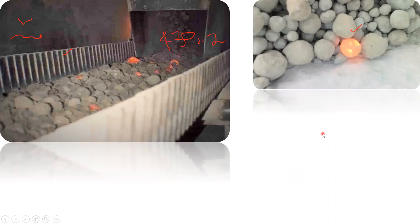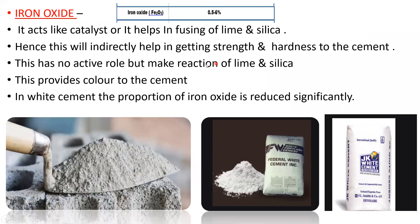Now coming to iron oxide. The iron oxide percentage should be in between 0.5 to 6 percent. Iron oxide itself doesn't do anything directly — it actually acts like a catalyst, helping in the fusing of lime and silica. We've seen that lime and silica both give strength and soundness to cement. Iron oxide helps fuse them so that the reaction products are formed.